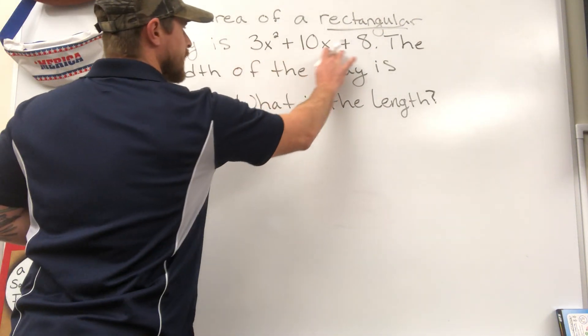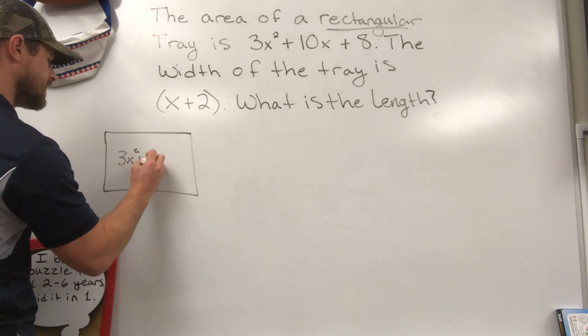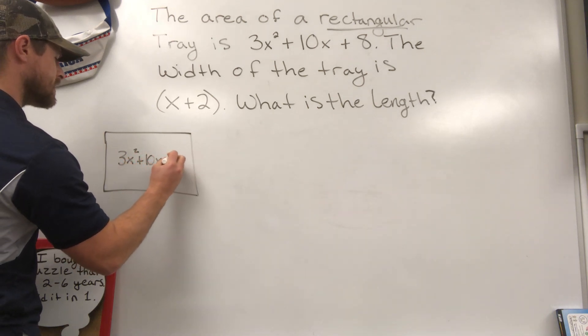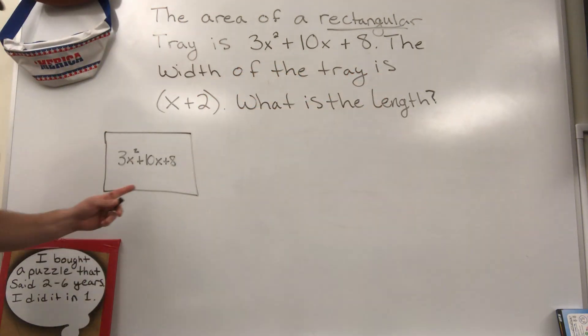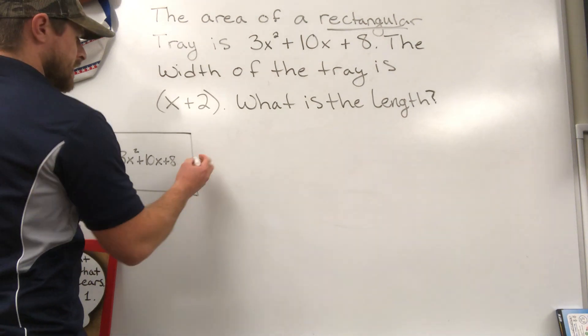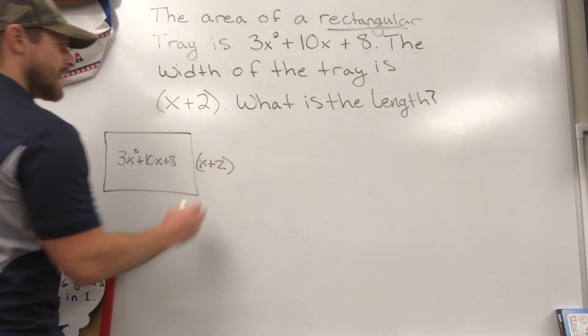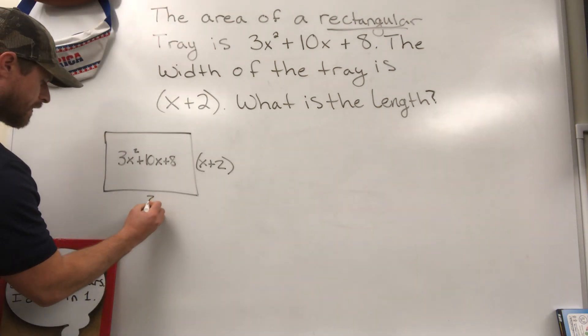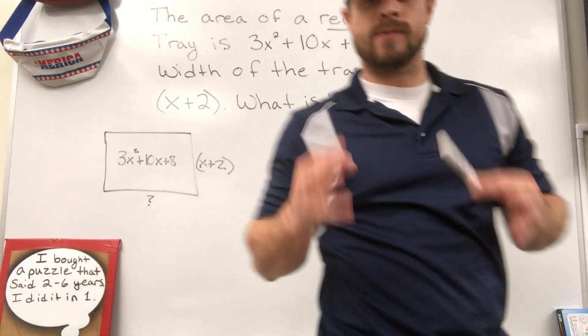What do we know about the area? We know the area is 3x squared plus 10x plus 8. Take that information, put it into the rectangle. The width of the tray is x plus 2. And what we're being asked is what is the length? So we need to figure out that right there. What is my length of this rectangle?